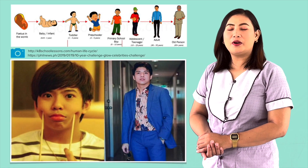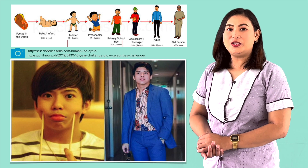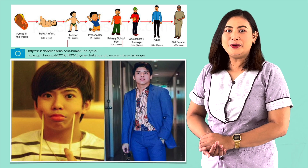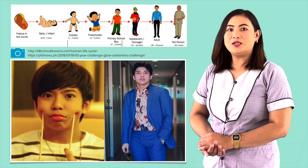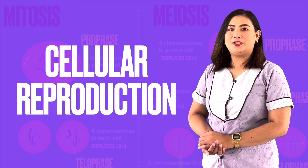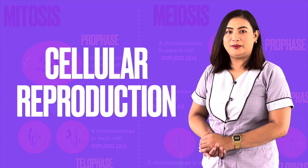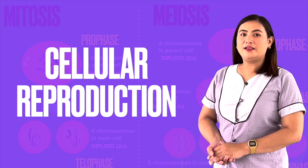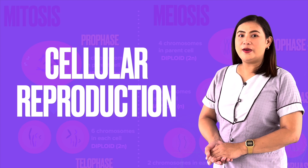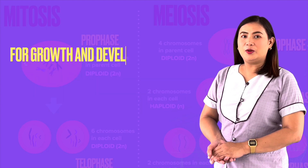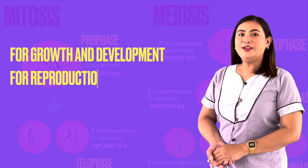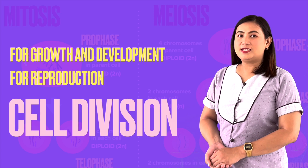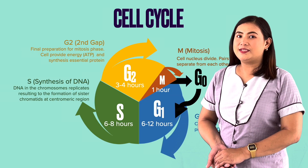Do you still remember your appearance as a child, say, when you were four or five years old? We change a lot as we grow up. What enables us to grow? Cellular reproduction is what makes our body grow and develop. Every living thing undergoes reproduction. The nutrients taken by an individual will provide energy for metabolic processes, for growth and development, as well as reproduction in the form of cell division.